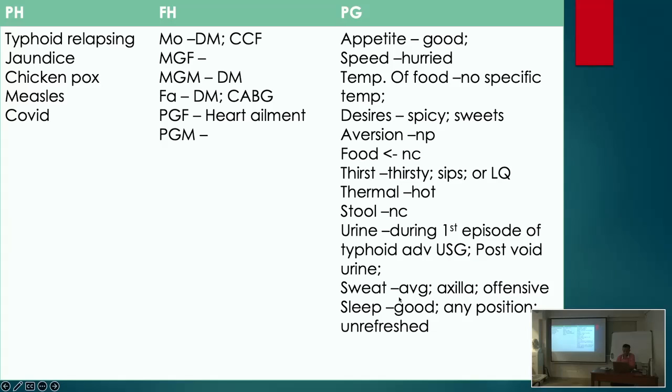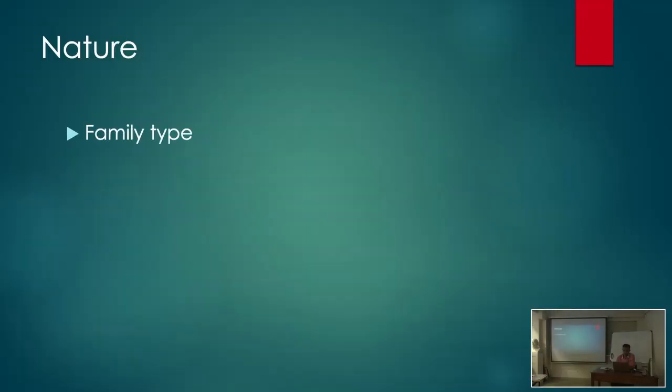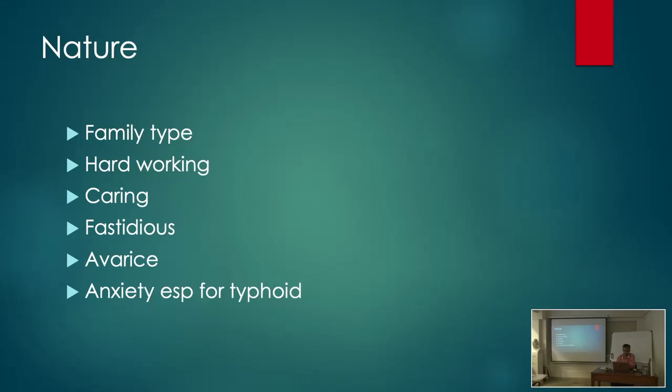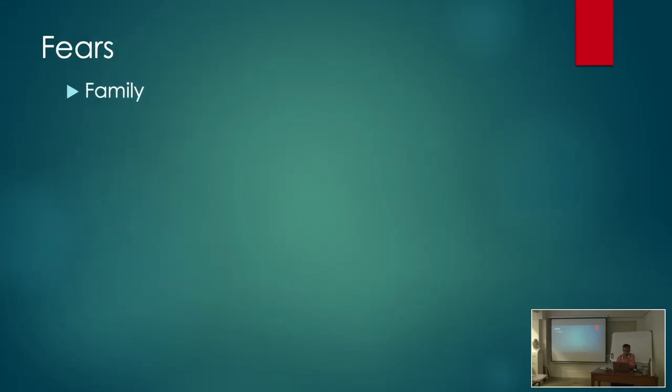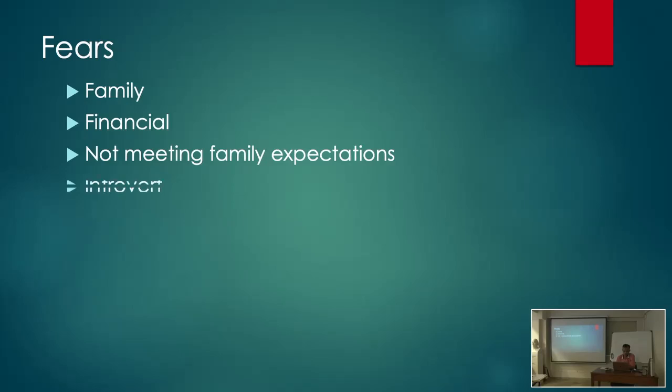During the first episode of typhoid he was advised USG where it showed some post-void urine. He sweats average in the axilla which is offensive. Sleeps good in any position, sometimes not fresh. He is a family type of person, hardworking, caring, very fastidious, avaricious, anxious about the typhoid.